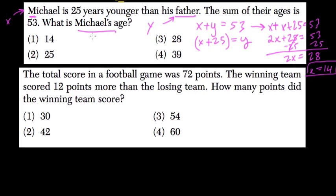We're just finding Michael's age, so his age is 14. Right, and if we add 25 to 14, what do we get? We get 39, and that's the father's age. And 39 plus 14 is 53.